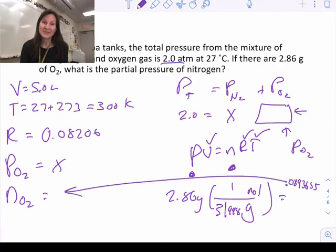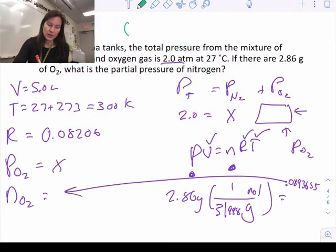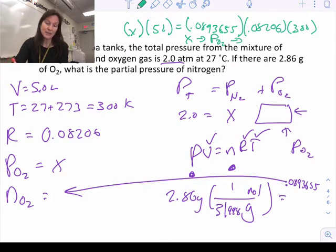To set up this problem we'll go the unknown P that's filling my five liters equals that N I just calculated, R that I chose and then the T that was given to me. What we find is the X, which remember was defined as our partial pressure of oxygen, ends up being about 0.44 atmospheres.